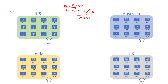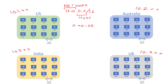For the US, the network looks like 10.1.x.x. For Australia, it's 10.2.x.x. For India, it's 10.3.x.x. And for the UK, it's 10.4.x.x — where x can be anything from 0 to 255.